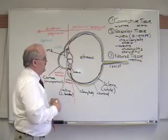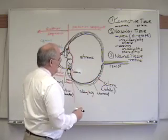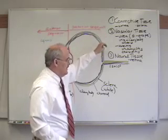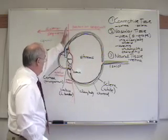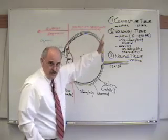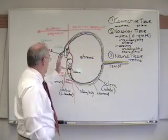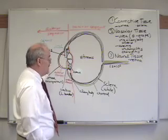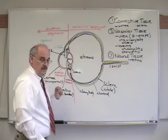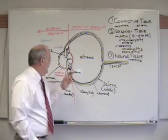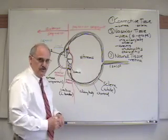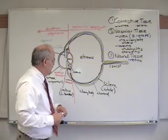So this is the anatomy of the globe. Once again, three layers: the connective tissue layer, the vascular layer, and the neural layer. Within the globe we have the anterior segment and the posterior segment. Within the anterior segment we have the anterior chamber, which is between the cornea and the iris, and the posterior chamber, which is between the iris and the lens. These are the major components. The vitreous fills the posterior segment of the eye.